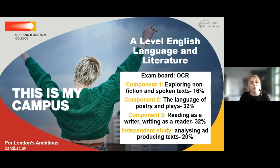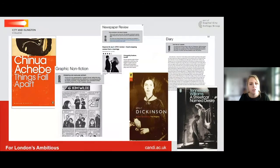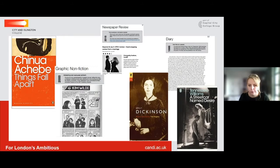Our next subject is English Language and Literature, also with OCR. This has three components plus an independent study aspect. Component 1 focuses on an anthology of 20 non-fiction spoken and written texts — you can see on the next slide screenshots showing a real wide variety of genres, which makes it really interesting and engaging. In Component 2 we study a poetry collection from Emily Dickinson and A Streetcar Named Desire.